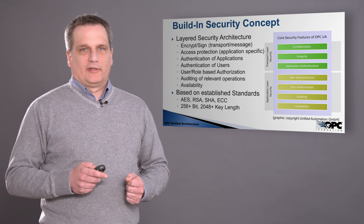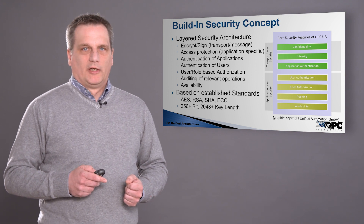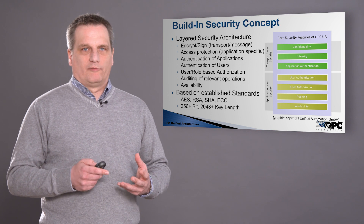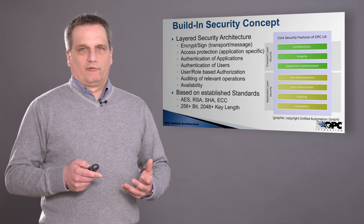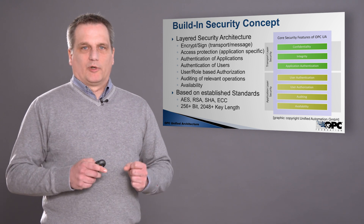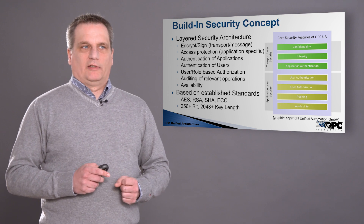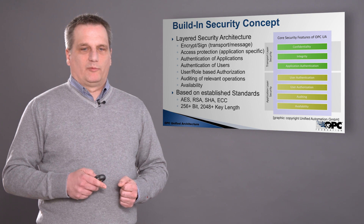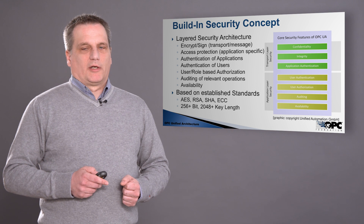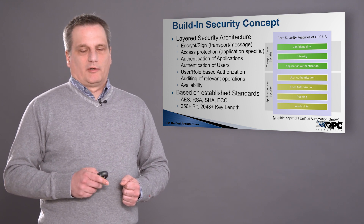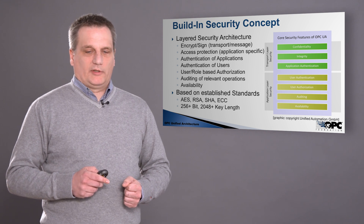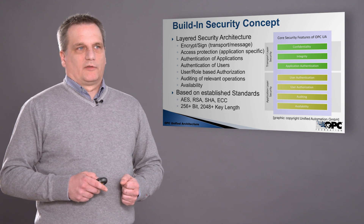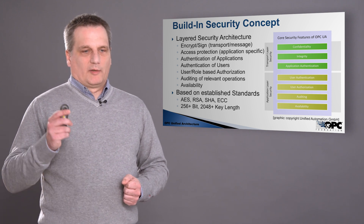In addition, there is an auditing system built into OPC UA. Any changes or modifications to the security of nodes are audited, and the server records this information so we can find out what happened and who changed what setting. The security of OPC is based on established standards: AES and RSA. We have SHA algorithms and we even use elliptic curve cryptography, with encryption depths of more than 256 bits and key lengths starting from 2048 going up to 4000, depending on the computing power of the device.